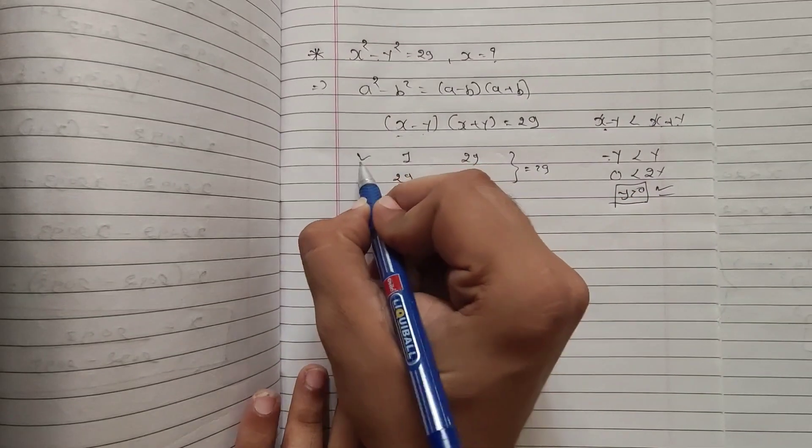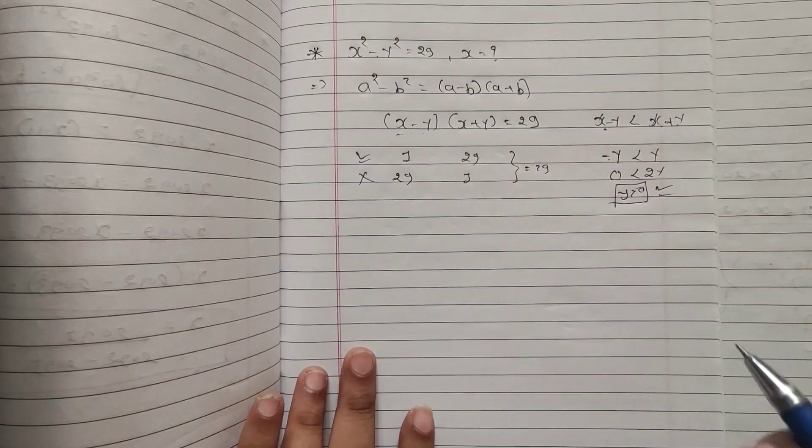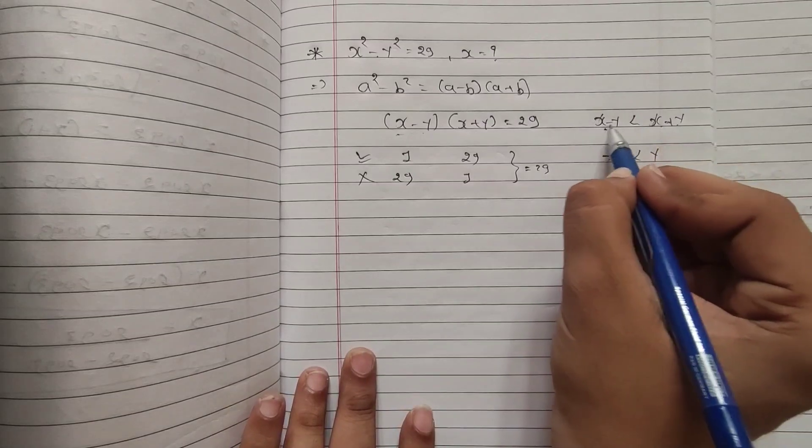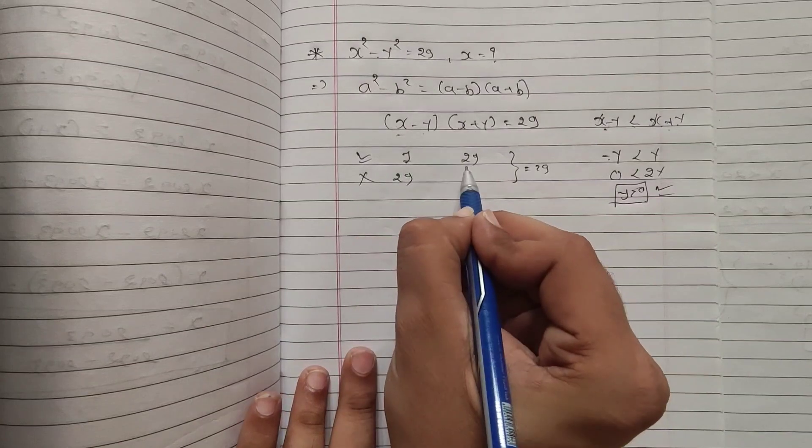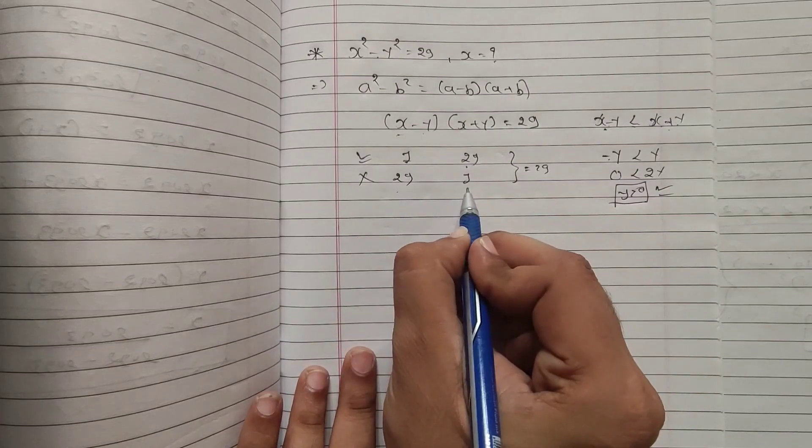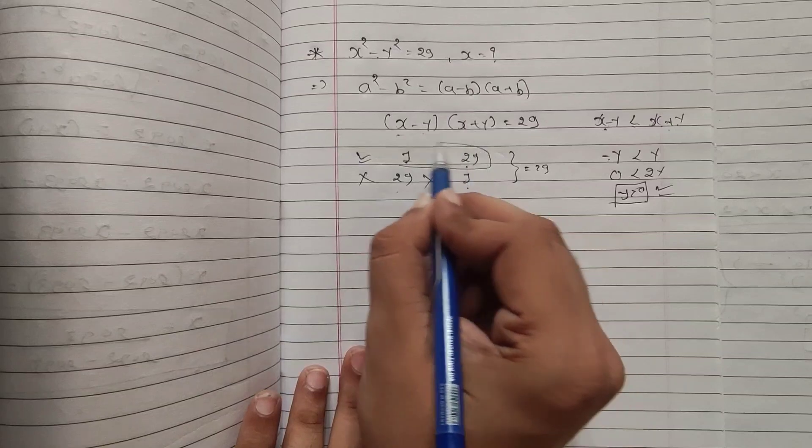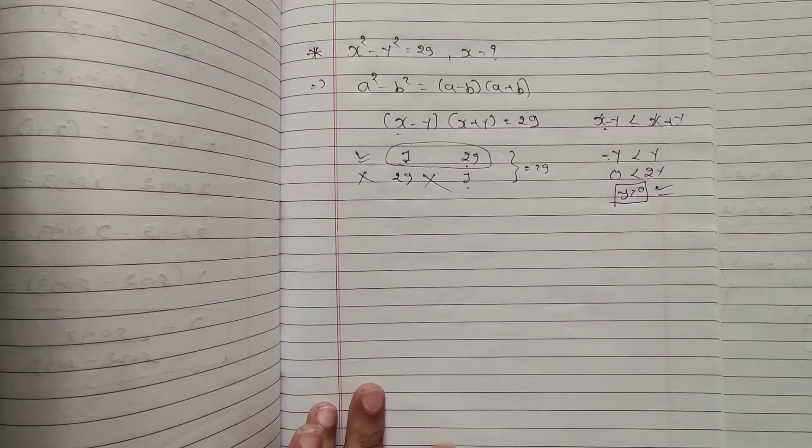But this will be right and this will be wrong. Why? Because one very simple reason that x minus y has to be less than x plus y. So here 1 is less than 29, but here 29 is greater than 1 which is not possible. So this is the only possibility we will take to solve this question further.